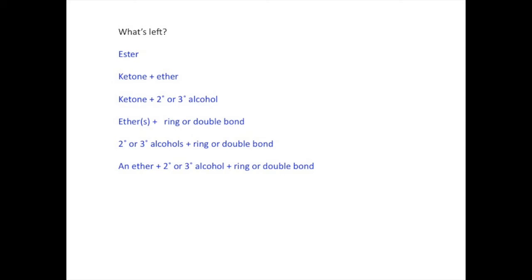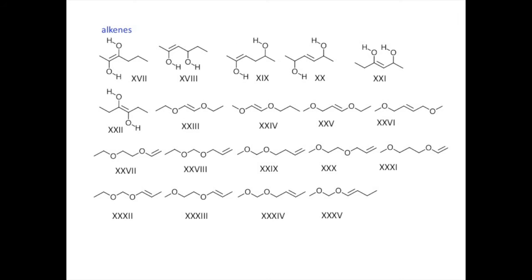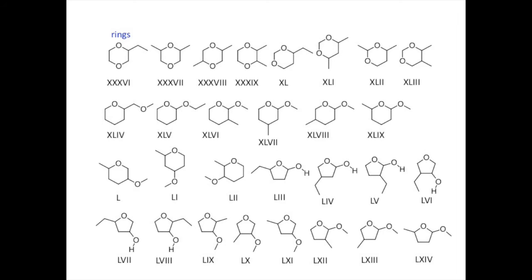This leaves us several combinations for two oxygen atoms and a ring or a double bond. Here are a few candidates for esters and some others that are ketones. Here are some alkene candidates. There are many more examples with different branching arrangements that we could draw. However, if we work through these candidates, then it will become clear what structural features work and what does not.